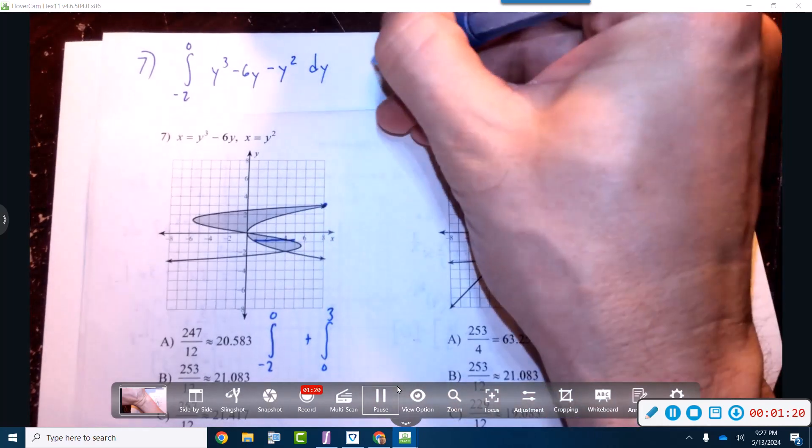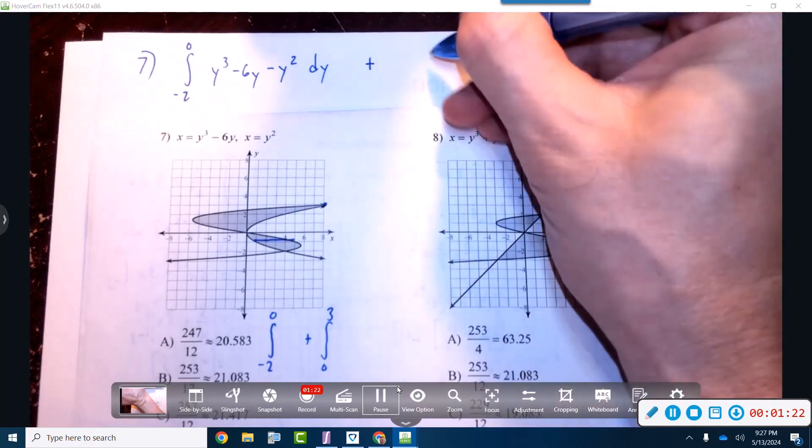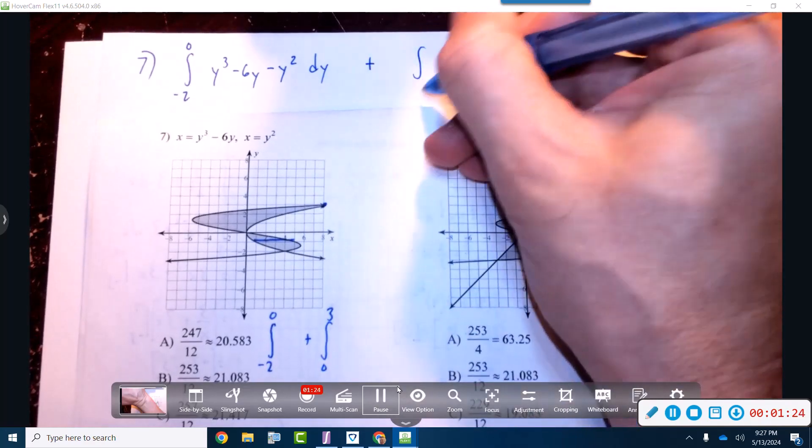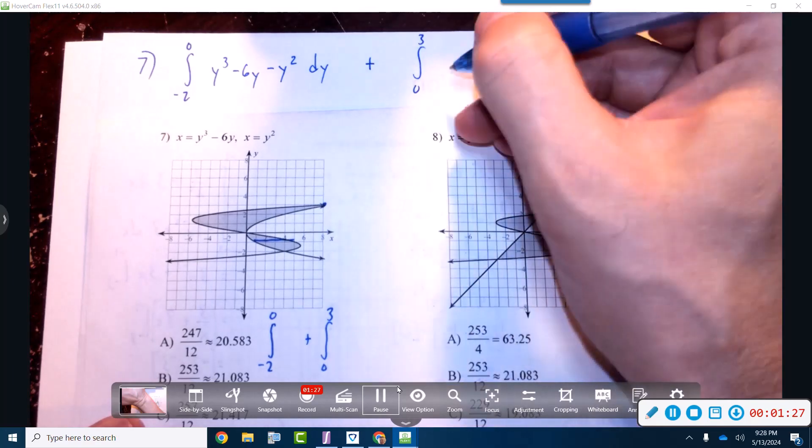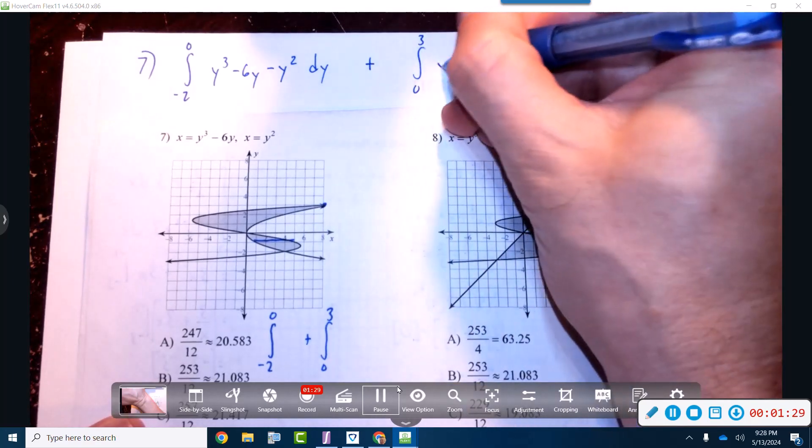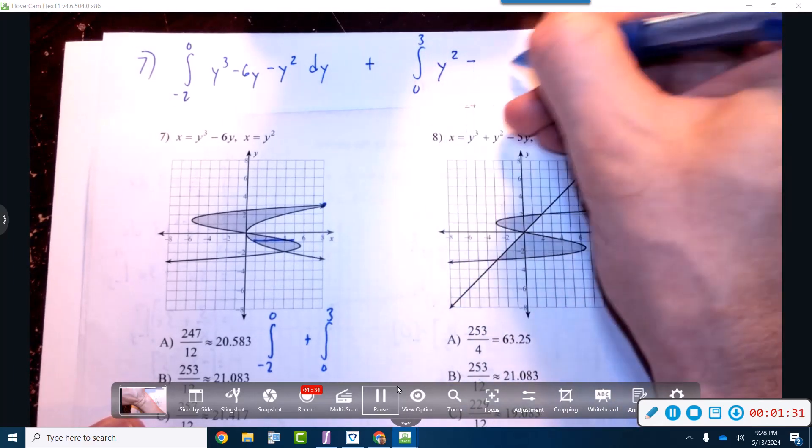dy, and then plus this will be the other one that we'll do separately. We're going to go from zero to three, and that's where the quadratic will subtract the cubic.